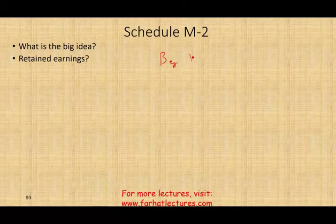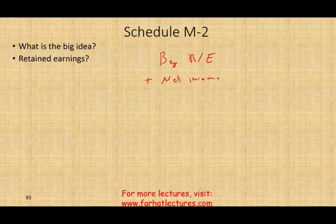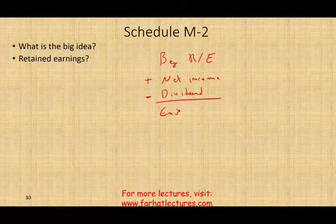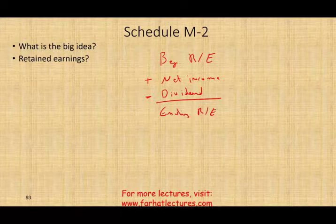We take beginning retained earnings plus net income, or minus net loss. If we are going to be positive, we have net income, minus dividends. And that gives you your ending retained earnings. This is a simple but powerful formula that you should have learned in Accounting 101 and will use in advanced accounting.